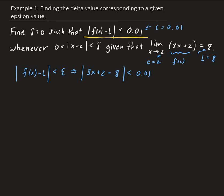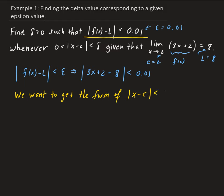From here, we're going to try and get the form of |x minus c| less than delta. Once we get into this form, we can identify the corresponding delta value, and that will be our solution. So we can simplify 3x plus 2 minus 8, which gives us 3x minus 6, less than 0.01.